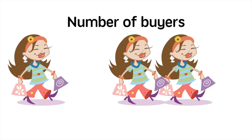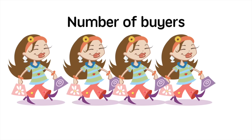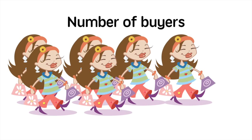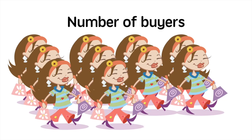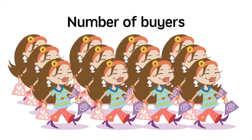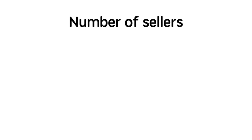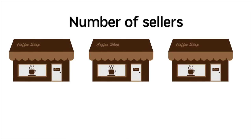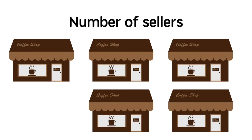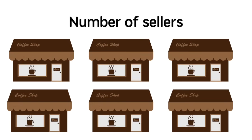However, if there are so many buyers then none of them have any market power over price and we move towards a more competitive market structure. Similarly with sellers, if there's only one coffee shop in town, the behaviour of the firm will be different to a situation in which there were many more coffee shops.